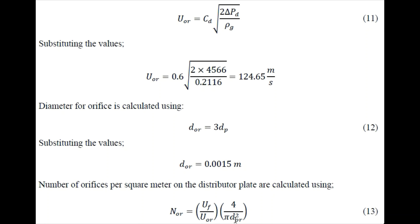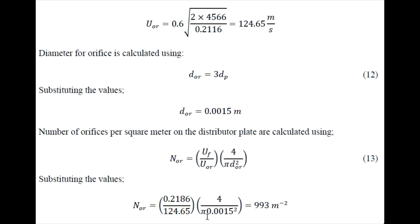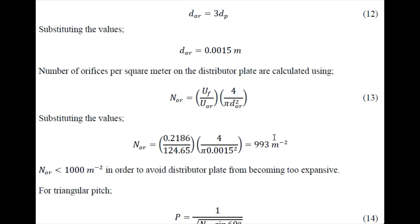Now how many orifices will be there per square meter of the distribution plate? We have this formula where we have diameter of orifice, fluidization velocity, and velocity through the orifice. We can substitute these values to obtain the number of orifices as 993 per meter square. This value is less than 1000 which is feasible, because otherwise it will become too expensive.